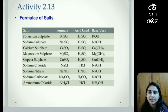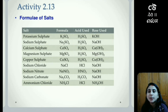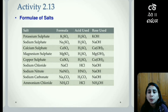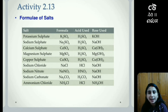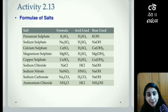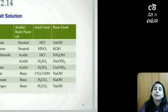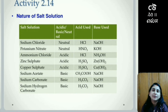Sodium nitrate NaNO₃ is formed when nitric acid combines with sodium hydroxide. Sodium carbonate Na₂CO₃ is formed when hydrogen carbonate combines with NaOH. Ammonium chloride NH₄Cl is formed when hydrochloric acid combines with ammonium hydroxide. So in this activity we have learned the formulas of different salts and how these salts are made when different acids and bases combine together.